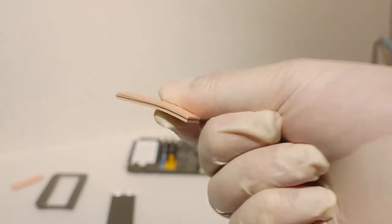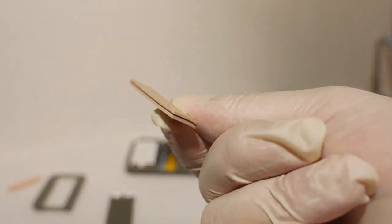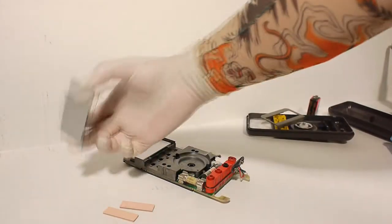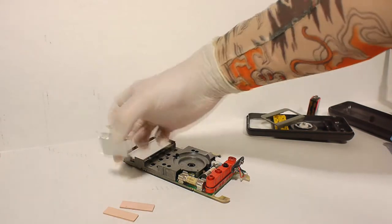Step nine: using a cotton swab and rubbing alcohol, clean the top and bottom edges of the elastomeric connectors and the top and bottom edges of the back side of the LCD.